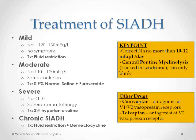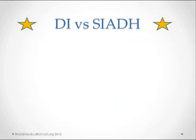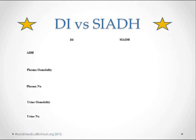Now let's compare lab values in diabetes insipidus and SIADH. ADH in diabetes insipidus is normal to low, which means the kidney is unable to absorb water, so plasma osmolality and sodium will be high. Since there is too much water in the urine, the urine osmolality and urine sodium will be low. In SIADH, the lab values will be exactly opposite to those of diabetes insipidus.